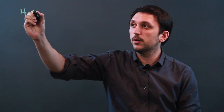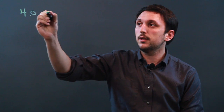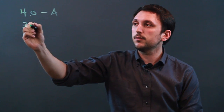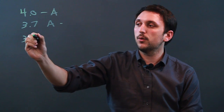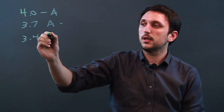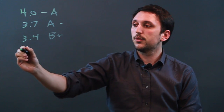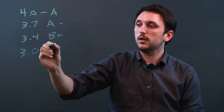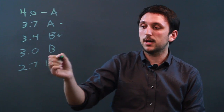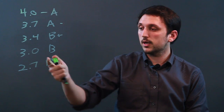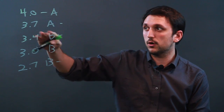Now, first of all, different GPA scales are different, but I'm going to use a very standard one in which 4.0 is an A, 3.7 is an A-, and 3.4 is a B+, 3.0 is a B, and 2.7 is a B-. We're not going to go lower than that, but we'll just start with this.